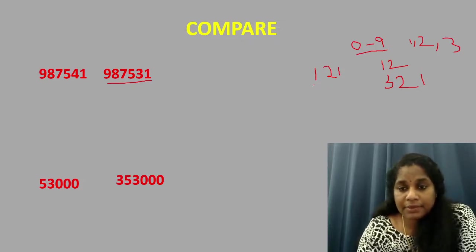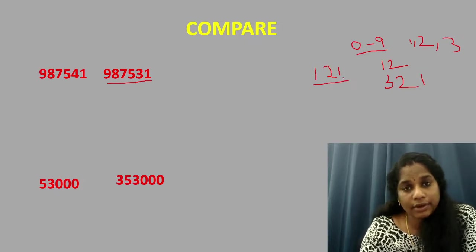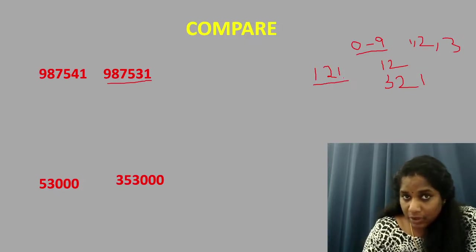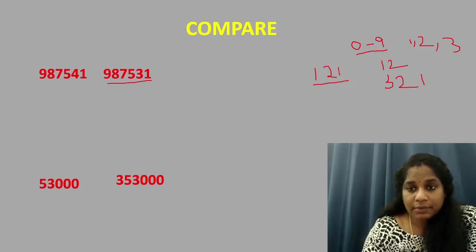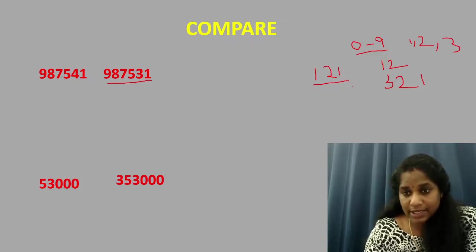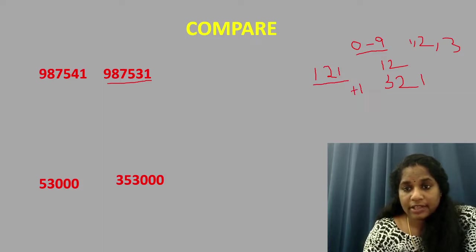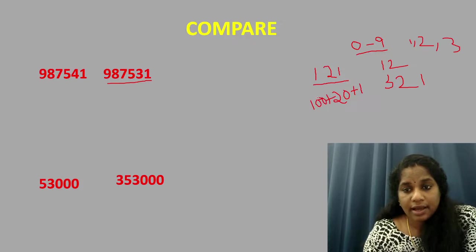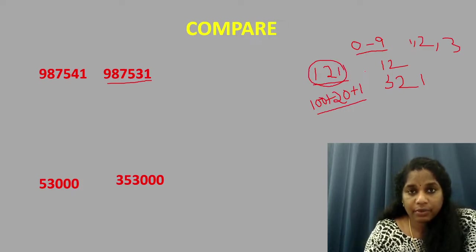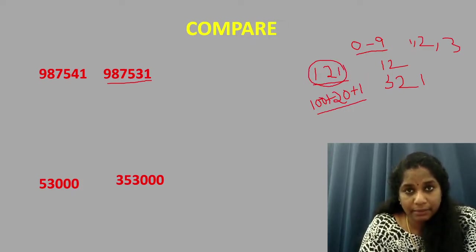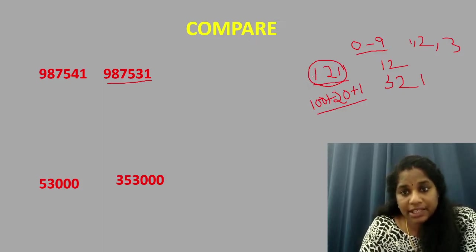So now if I am supposed to answer, why is it 121? What will I say? It is because of the place value. So 1 comes under which place value? 1 is at 1's place. So 1 into 1 is 1 and 2 is at 10's place. 2 into 10 is 20. 1 is at 100's place. 1 into 100 is 100. If I add all three of them, I should get 121. So we just went ahead and expanded the number to see the place value of different digits in this particular number.